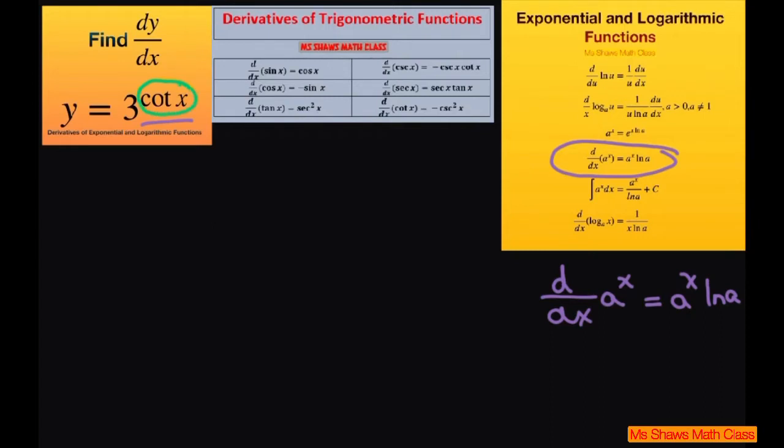So the way you set it up is you're going to write derivative of y with respect to x equals, and then we're going to write this out, where you differentiate with respect to x, 3 to the power of cotangent of x.